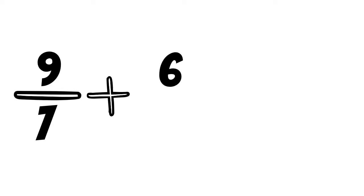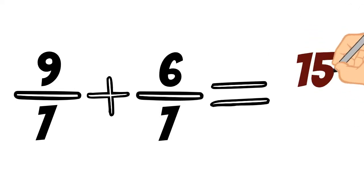So kids, 9 over 7 plus 6 over 7 is equal to 15 over 7.